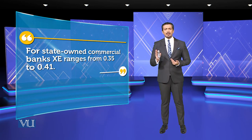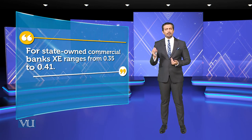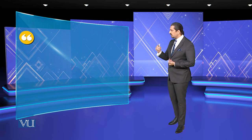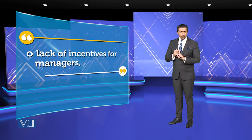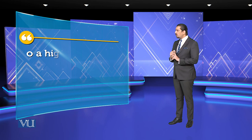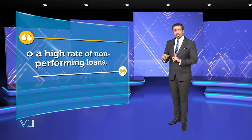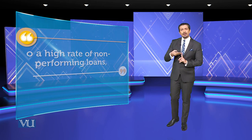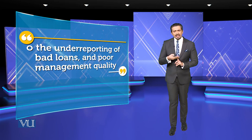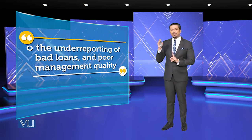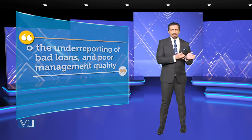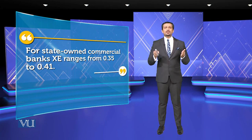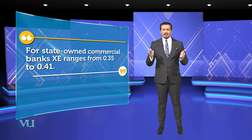When discussing SMEs, X-efficiency can be applied here too. The main causes of X-inefficiencies were and are: lack of incentives for the managers. This arose from a high rate of non-performing loans — as I just discussed — and then the upgrading of bad loans, and poor management quality. I gave the example of Pakistani banks to help you understand.